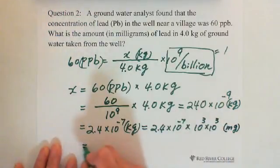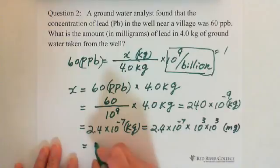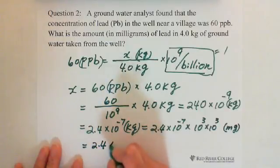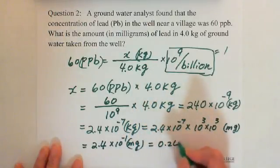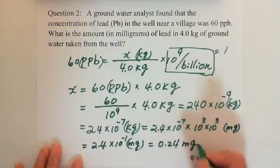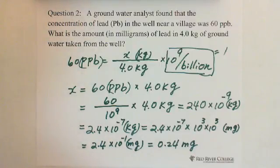So this equals 0.24 milligrams. That means the amount of lead in 4 kilograms of ground water taken from the well is 0.24 milligrams.